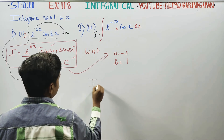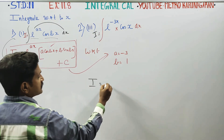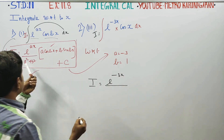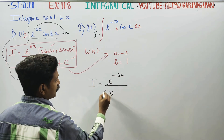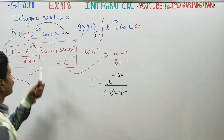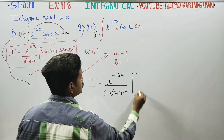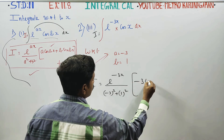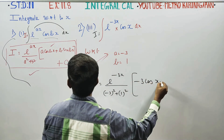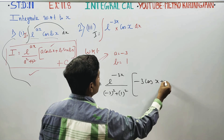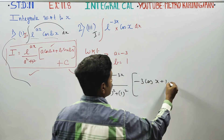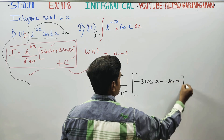Therefore, I equals e^(ax), where a equals minus 3, so e^(-3x), divided by a squared plus b squared — that is, minus 3 whole squared plus 1 squared. Then, a cos(bx): a is minus 3, cos(b) where b equals 1, so cos(1x). Plus b sin(bx), which is sin(1x). Plus C.